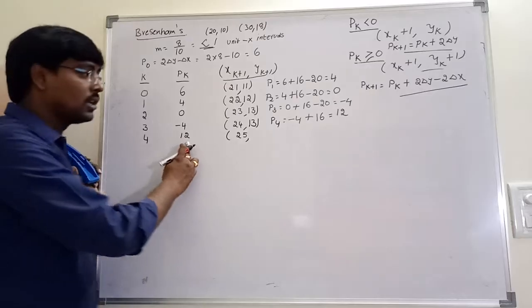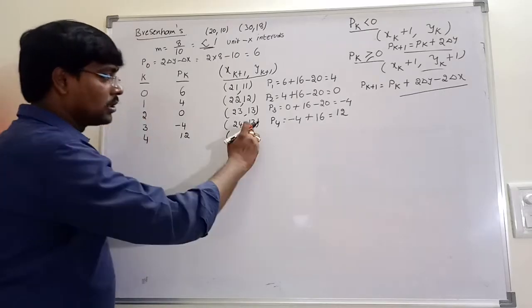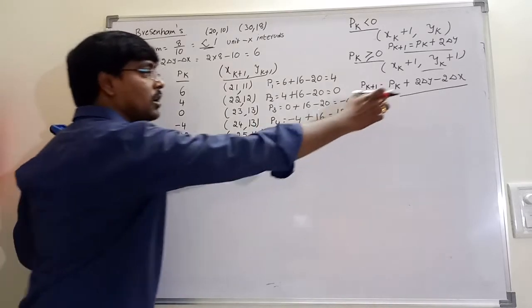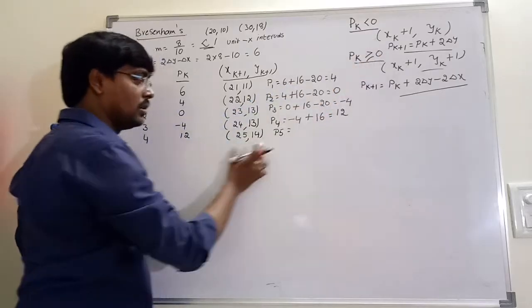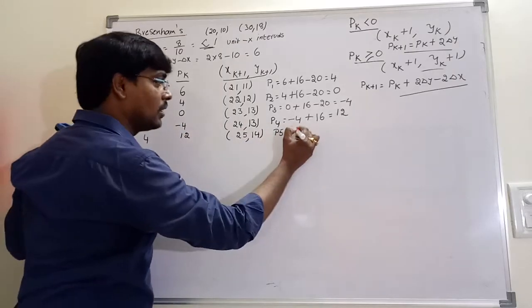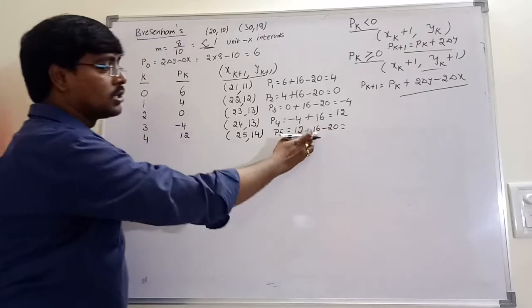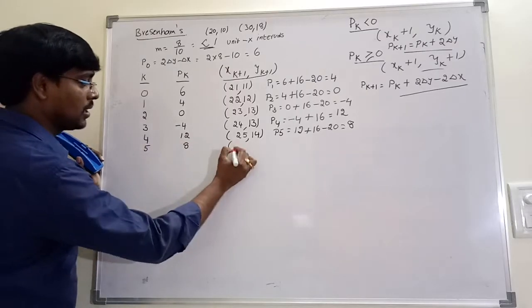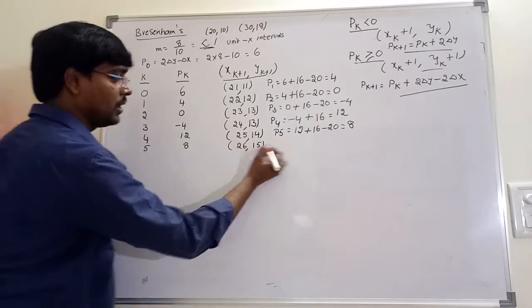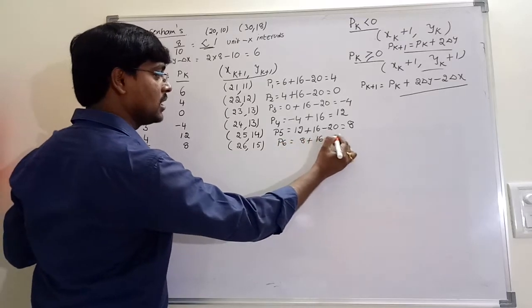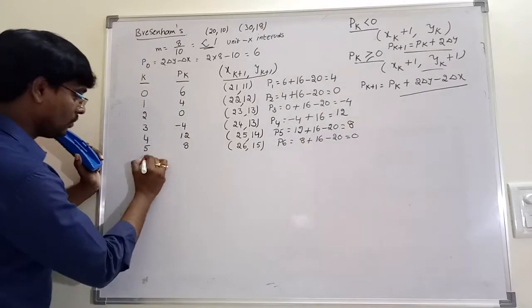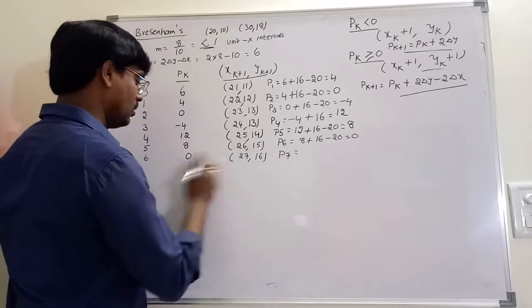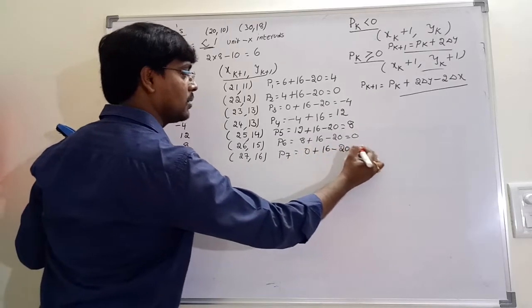At k=4, p4 equals 12 and the coordinate is (25, 13). It is greater than or equal to 0, so y is incremented by 1 to 14. P5 equals p4 plus 2 delta y minus 2 delta x, that is 12 plus 16 minus 20, equals 8. Next coordinate is (26, 15). P6 equals 8 plus 16 minus 20, that is 4. Wait — p6 equals 8 plus 16 minus 30, that is 0. Since p6 is greater than or equal to 0, next coordinate is (27, 16).